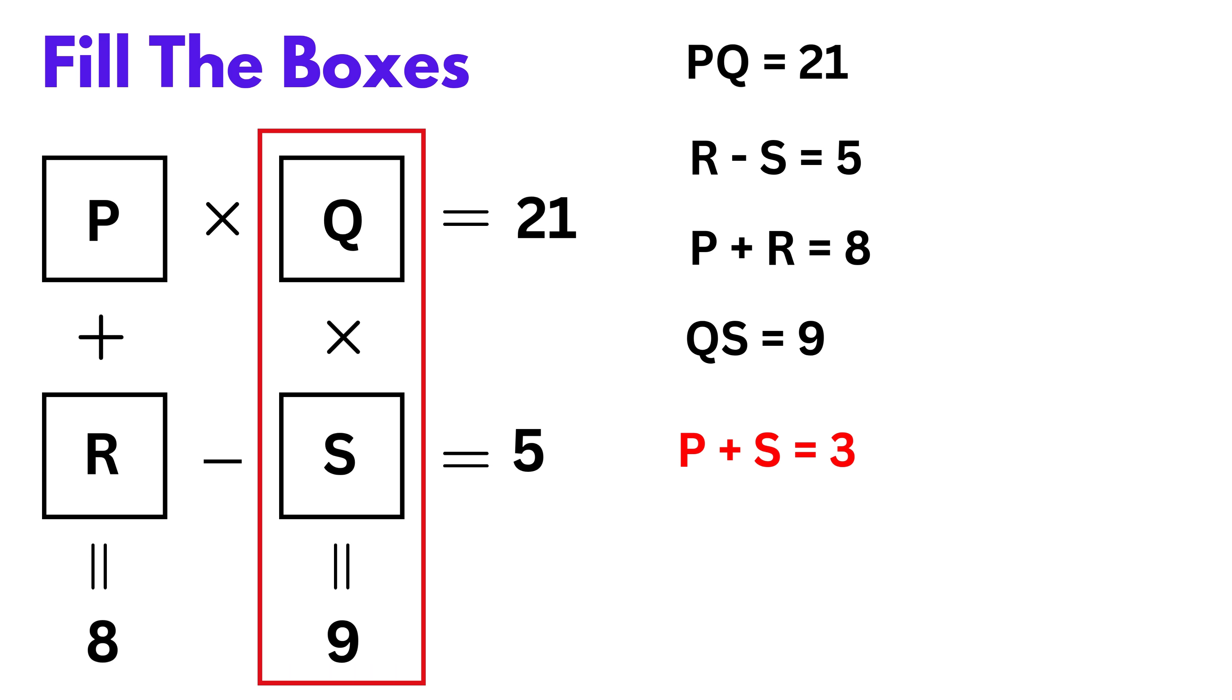Now take the first equation, P times Q equals 21, and divide both sides by P to get Q equals 21 divided by P. Similarly, from the last equation, Q times S equals 9, we divide both sides by S. Since both are equal to Q, we can set them equal to each other. So 21 divided by P equals 9 divided by S.